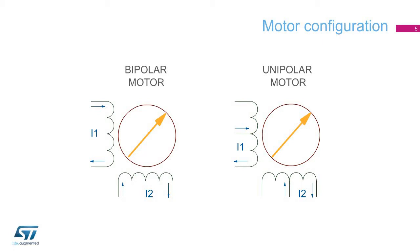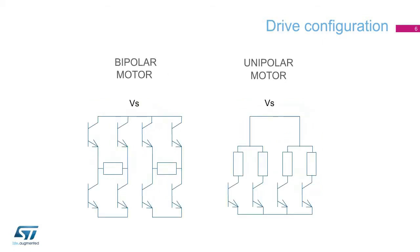For the bipolar motor, this is done by sequentially changing the polarity of the current in the two windings. For the unipolar motor, the coil is wound in a center-tapped configuration with the center typically connected to a positive supply voltage. Alternately connecting the two end connections to ground will change the direction of the resulting magnetic vector. The circuit required to drive each configuration — the bipolar motor needs eight transistors in a dual H-bridge, while the unipolar motor needs only four transistors connected to ground. Early applications often used the unipolar configuration since it required fewer transistors and did not require a level shift to drive the upper transistors of an H-bridge.